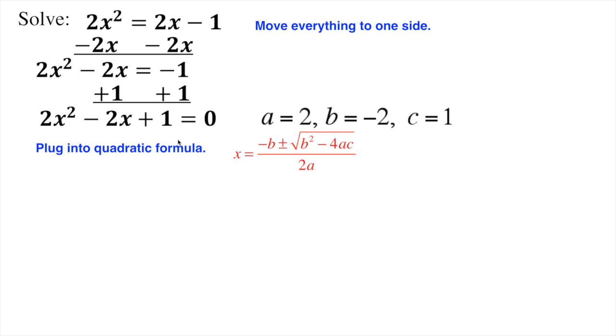And c is 1, that's the constant, the one without a variable, it's just all by itself. And that's why it's important that we get it all onto one side, then you'll get an accurate reading here of what a, b, and c are.